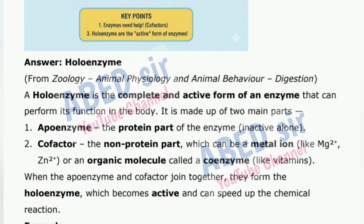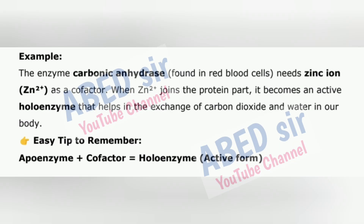The cofactor can also be an organic molecule called a coenzyme, like vitamins. When the apoenzyme and cofactor join together, they form the holoenzyme, which becomes active and can speed up chemical reactions. Example: the enzyme carbonic anhydrase found in red blood cells needs zinc ion Zn²⁺ as a cofactor. When Zn²⁺ joins the protein part, it becomes an active holoenzyme that helps in the exchange of carbon dioxide and water in our body. Easy tip: Apoenzyme + Cofactor = Holoenzyme (active form).